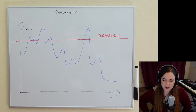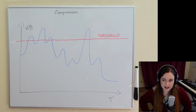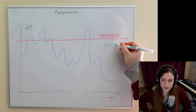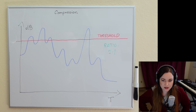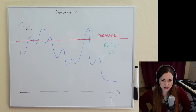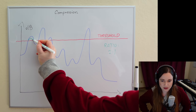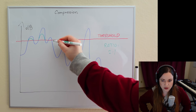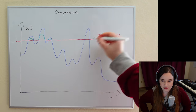There's our threshold. You can see some of the peaks are falling over it. What we do then is pick a ratio — for simplicity, let's say a ratio of 2:1. What this means is that all the signal dipping over the threshold is now reduced in volume by half.